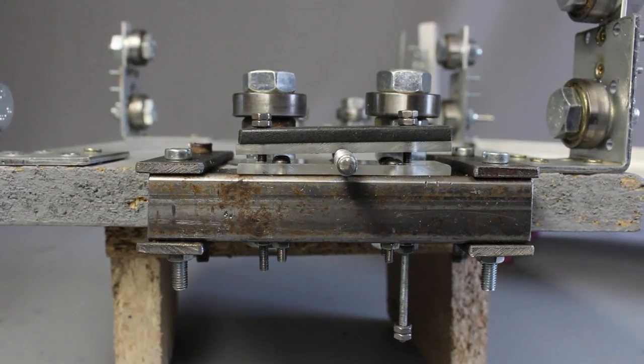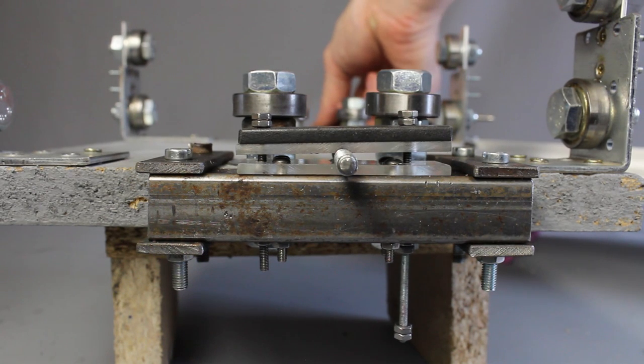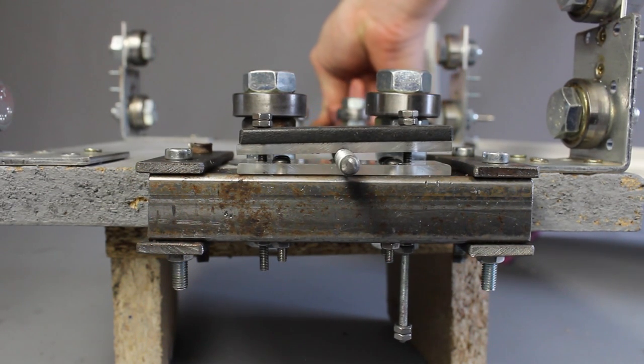Tighten the construction in such a way that there is no noticeable axial tolerance while you are still able to turn the threaded rod by hand.